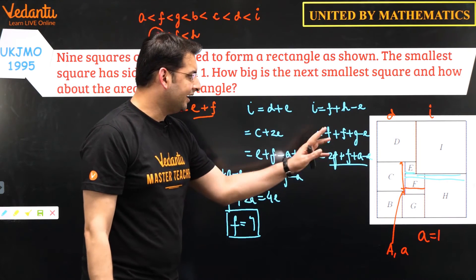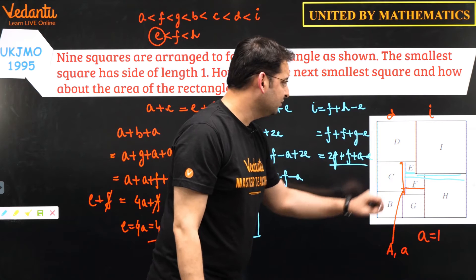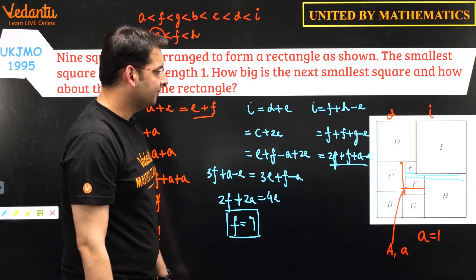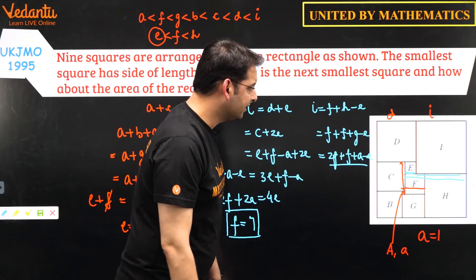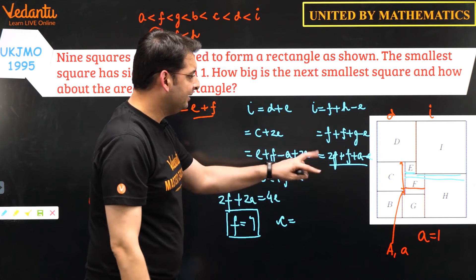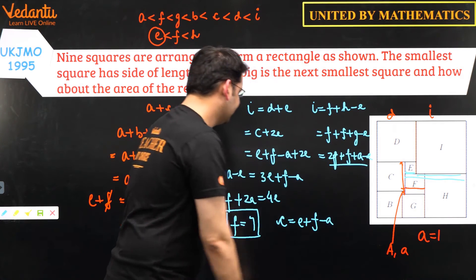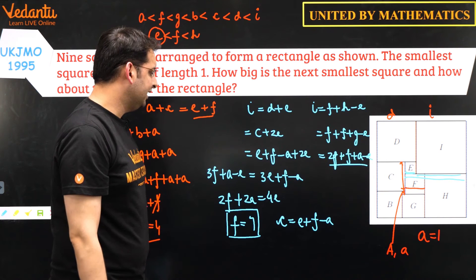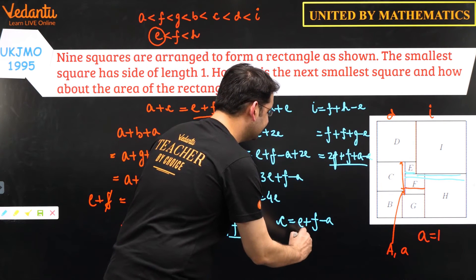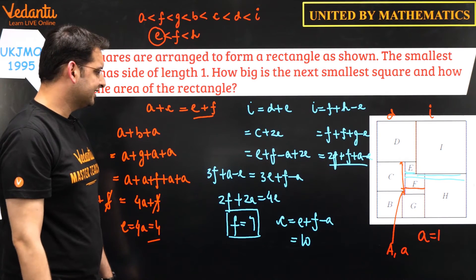Now using known values e = 4, a = 1, f = 7, we can find all other lengths. c = e + f − a = 4 + 7 − 1 = 10. Since c = b + a and a = 1, b = 9.